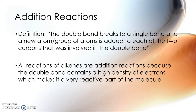This is a reaction type that is particular to things with double and triple bonds because you have to have a double bond to start. It's called an addition reaction because you're actually adding something onto it. The reason these reactions occur is that the double bond has two pairs of shared electrons in that double bond space, and so that shared pair of electrons means that anything with a slight positive charge is going to be very much attracted to that. It makes it very much a reactive site on the molecule.